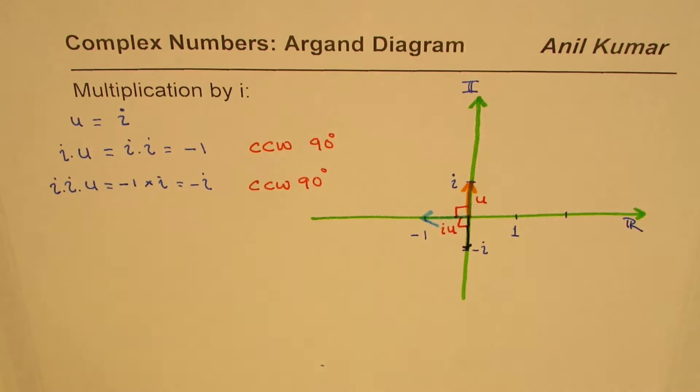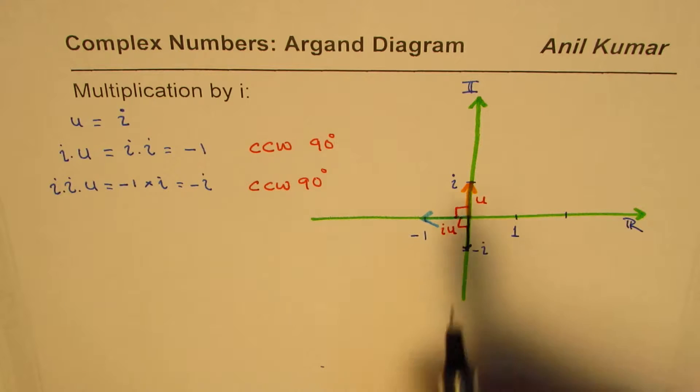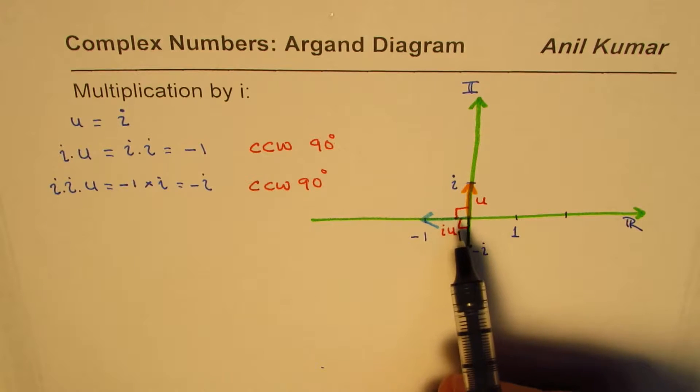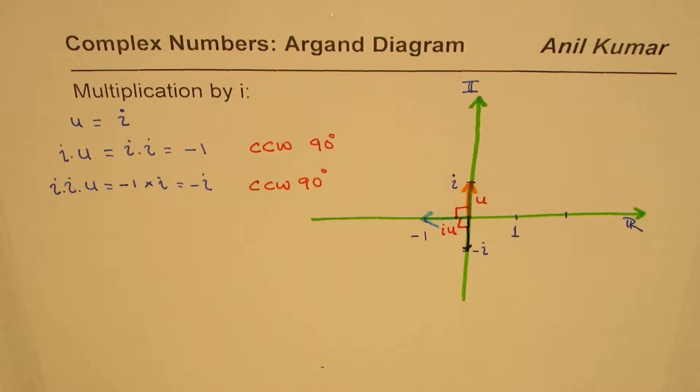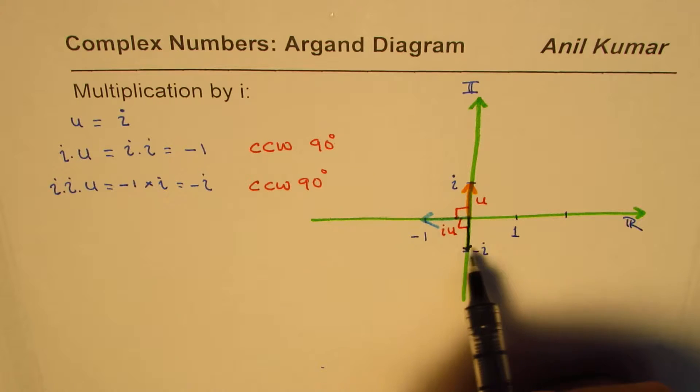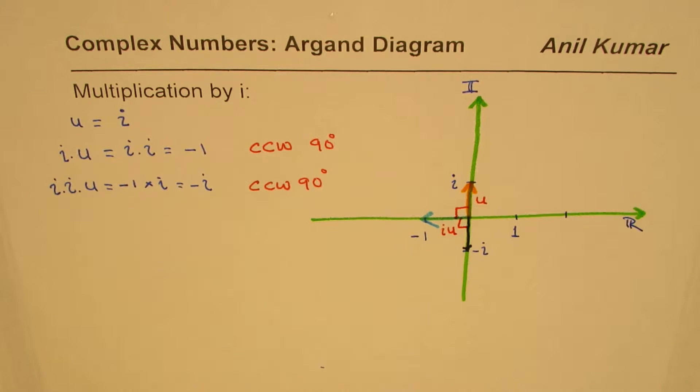So what you observe here is that every time you multiply by i, the complex number represented on the Argand diagram rotates counterclockwise by 90 degrees.